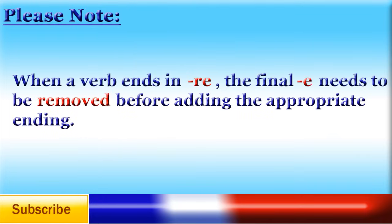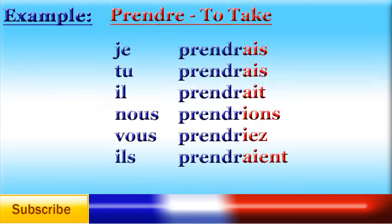Please note: when a verb ends in -RE, the final E needs to be removed before adding the appropriate ending. For example, 'prendre' — to take: 'je prendrais,' 'tu prendrais,' 'il prendrait,' 'nous prendrions,' 'vous prendriez,' 'ils prendraient.'